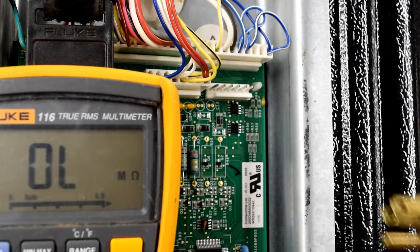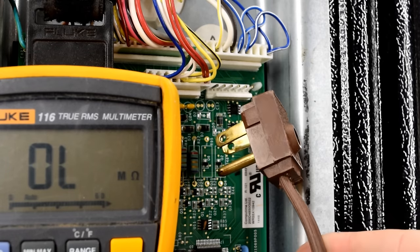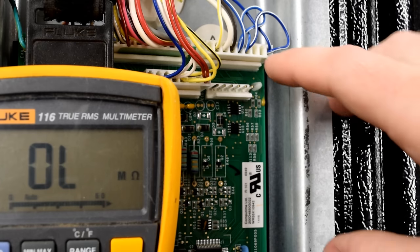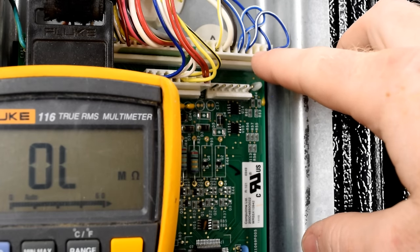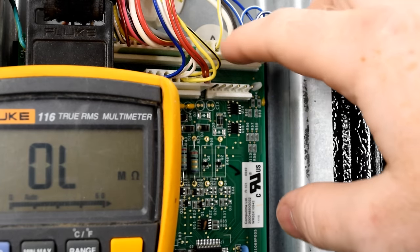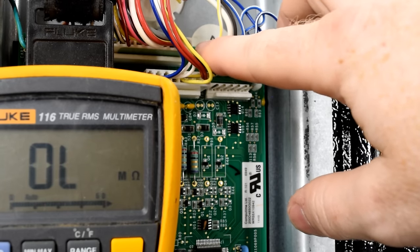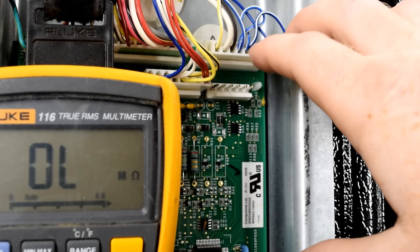So before you get started, make sure that your refrigerator is unplugged from the wall. We're performing these tests on a refrigerator with no power. So the plug that we're going to be dealing with is J1. And if you look on the green section of the board, you can actually see J1 listed just to the left of the plug that you're working on.